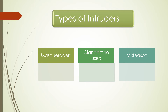Types of Intruders: An important early study of intrusion identifies three classes of intruders. First, the Masquerader: an individual not authorized to use a computer who penetrates a system's access control to exploit a legitimate user account. Second, the Misfeasor: a legitimate user who accesses data, programs, or resources without authorization, or who is authorized but misuses privileges. Third, the Clandestine User: an individual who seizes supervisory control of the system to avoid auditing and access control, or to suppress audit collection.